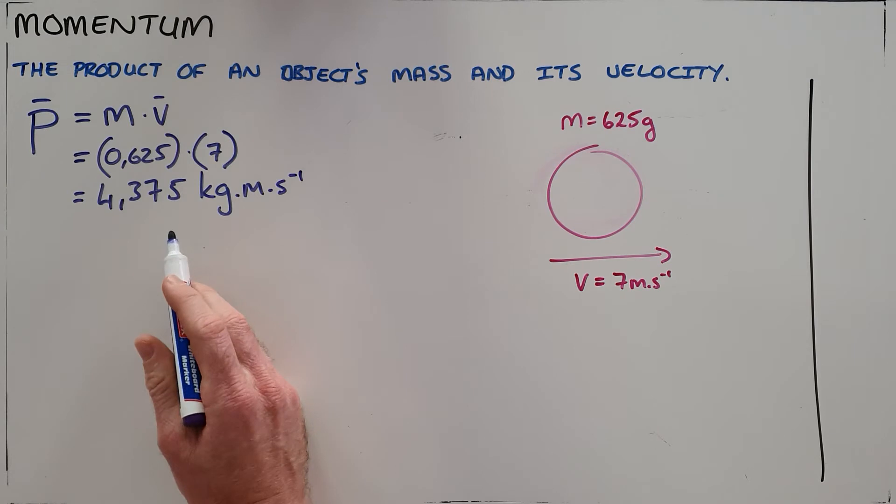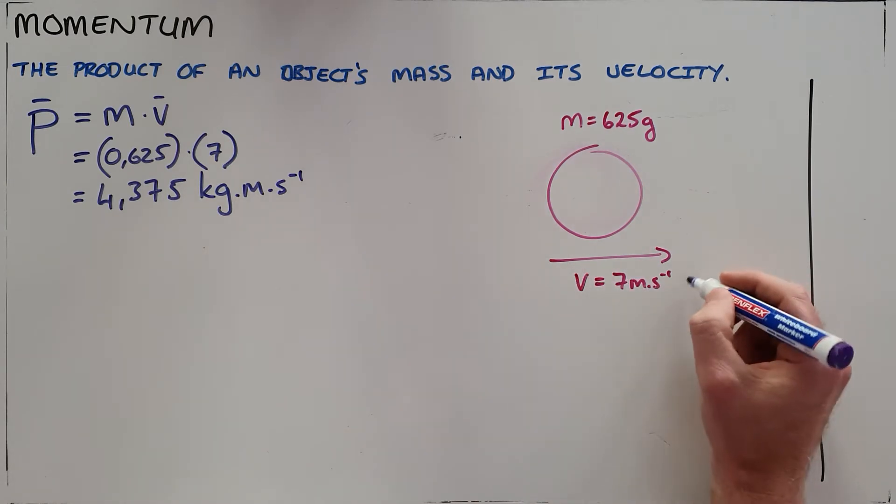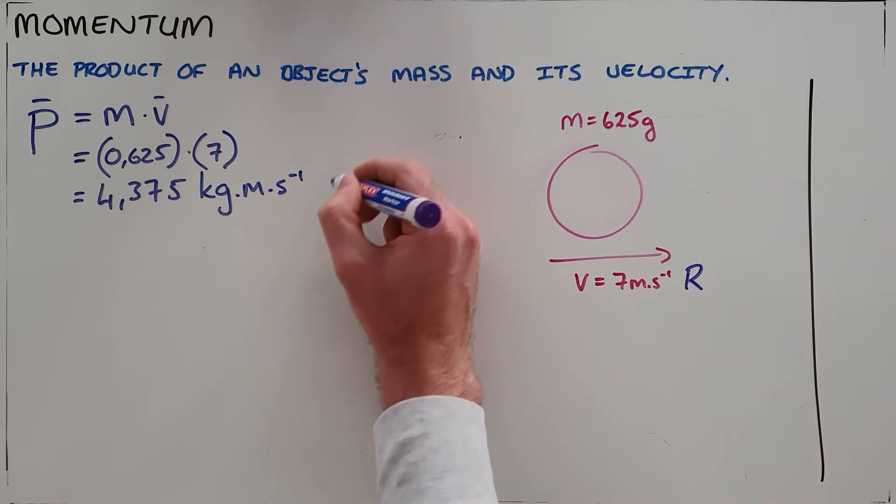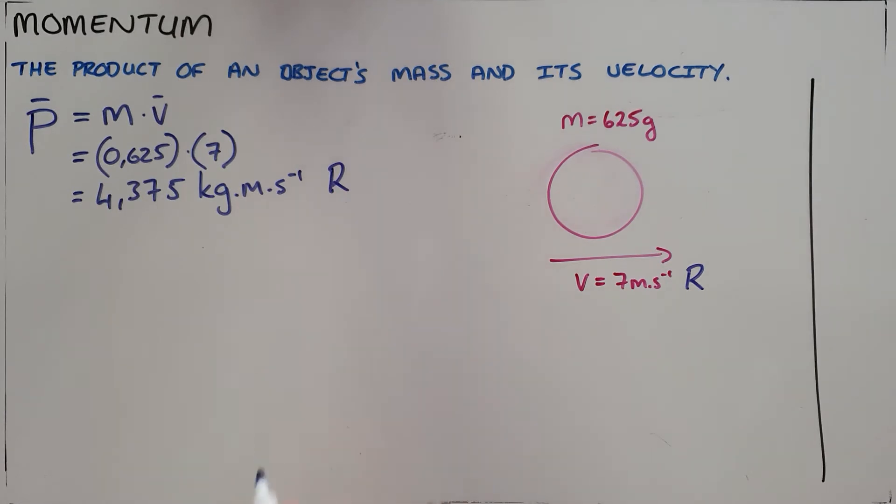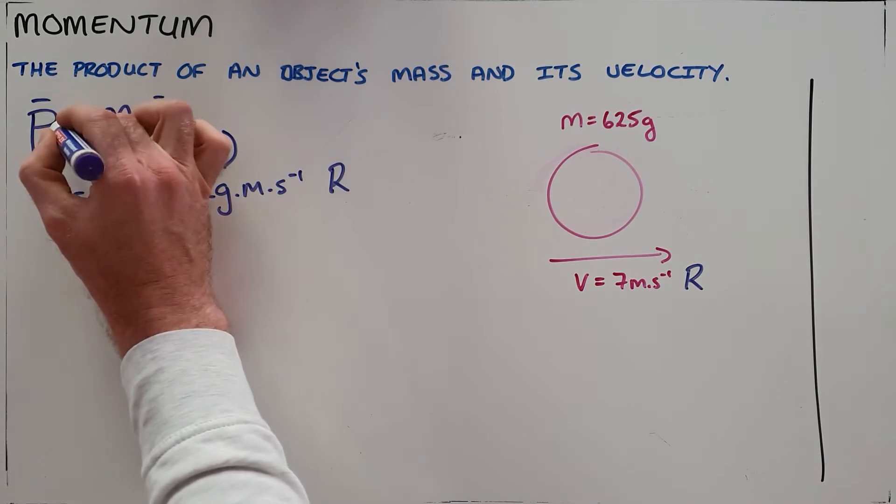And what we can also see is that the velocity was initially to the right, which means that this momentum is then to the right. And we can call this the initial momentum.